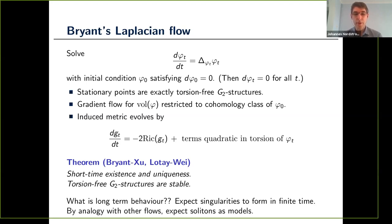Bryant, Chu, Lotay, and Wei have established short-time existence and uniqueness for this flow. If you have a torsion-free G2 structure, it is a stable fixed point — if you move slightly away from it, the flow will push you back. Long-term behavior is much harder to understand; the solution might not exist for all time because singularities can form in finite time. An important problem is to understand self-similar solutions — solitons — because they serve as models for how the flow could degenerate.